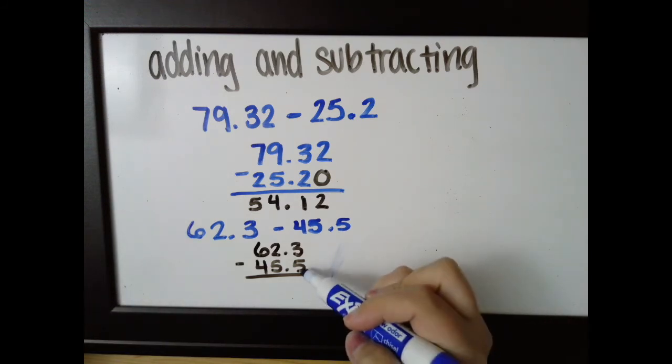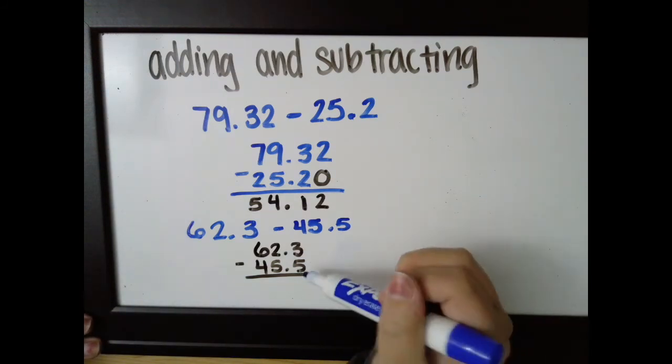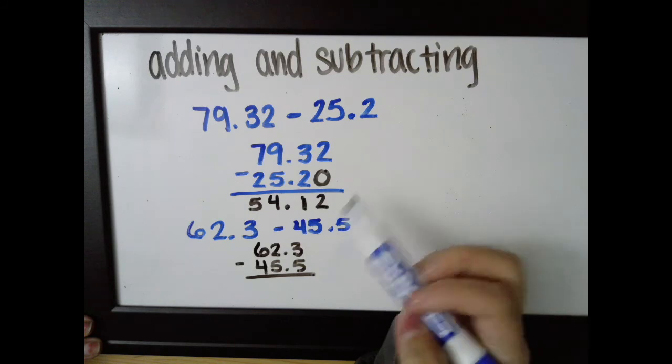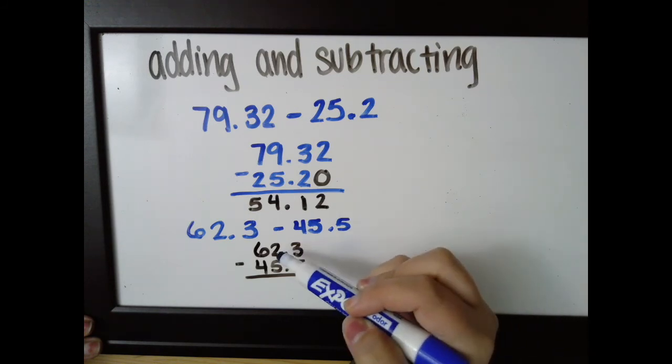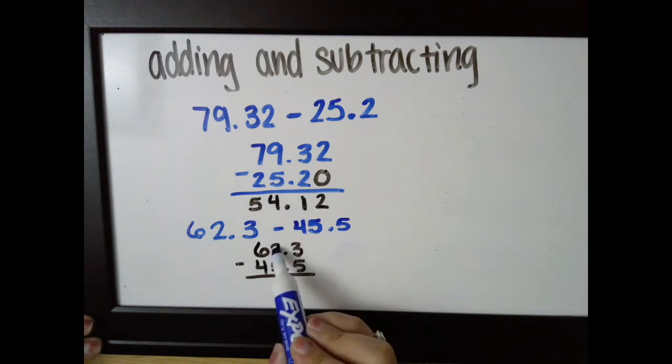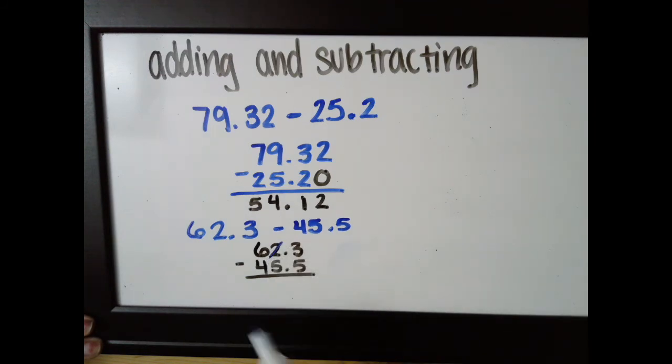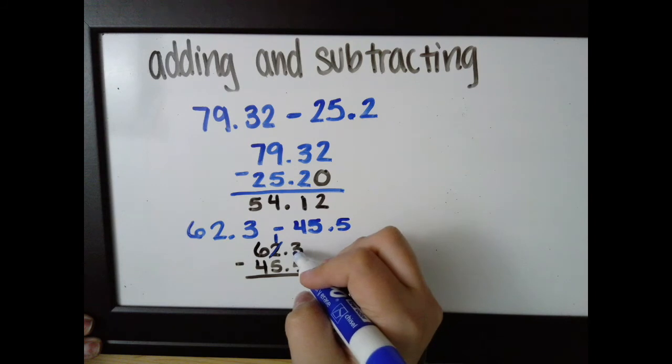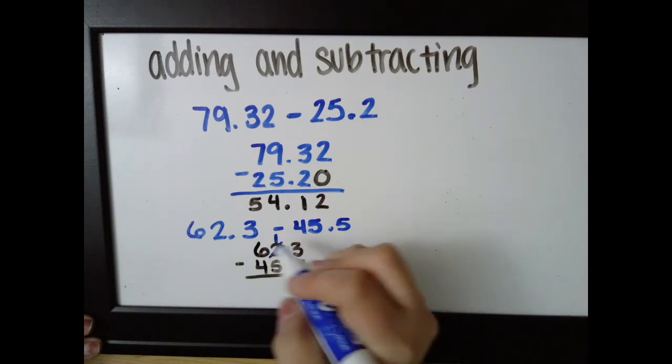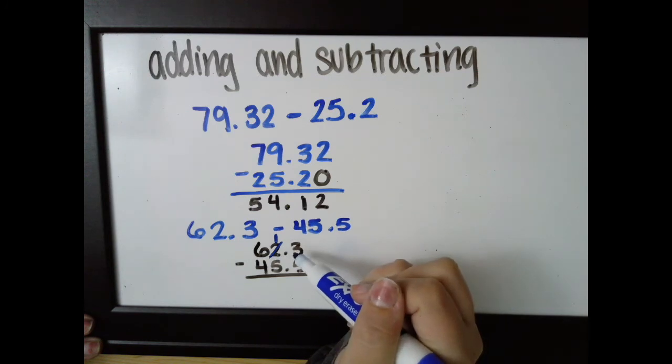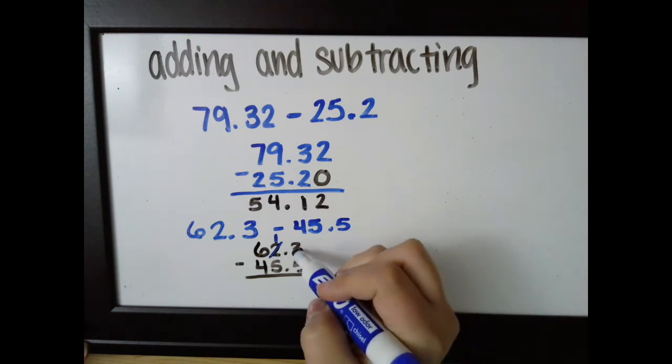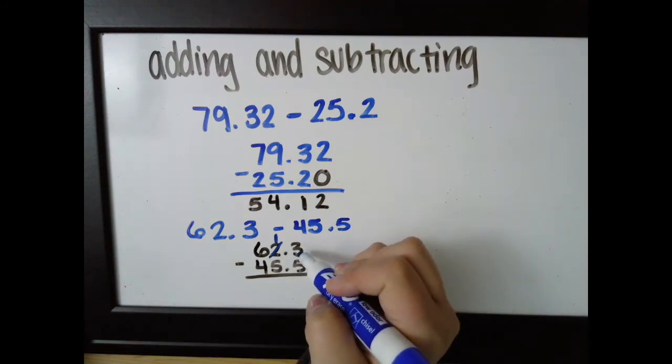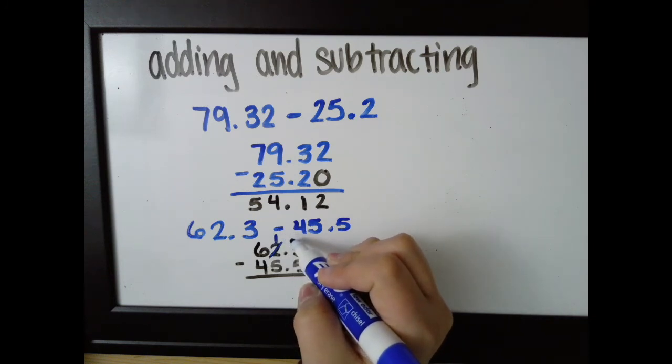Now when we are subtracting, this five here. So three tenths minus five tenths, I can't do that because three tenths is smaller than five tenths. So what I'm doing here is I am breaking this two up. This two whole is going to become one whole. And what's coming over here is what I'm really bringing over because we're on this side of the decimals. I'm breaking up that one whole number into ten pieces so that this is no longer three tenths.